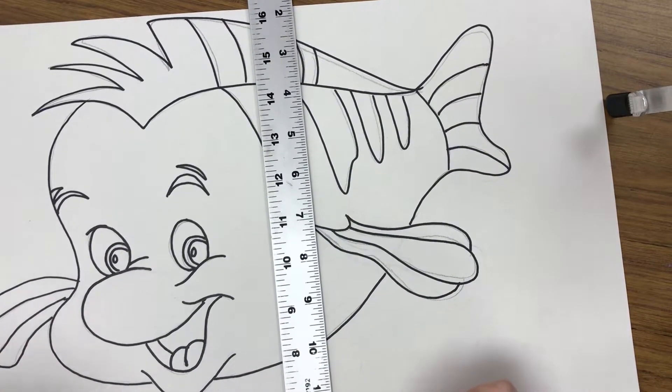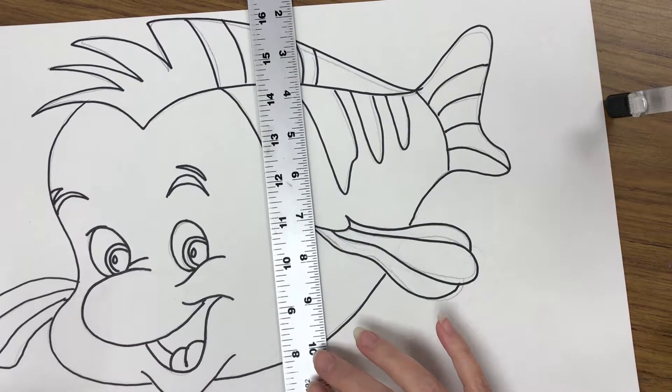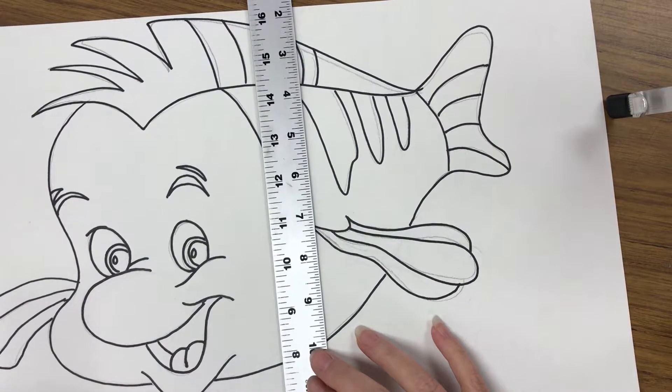When you're finished drawing your character, trace it with Sharpie. When you're finished tracing your character with Sharpie, then you're ready to go ahead and draw your lines.